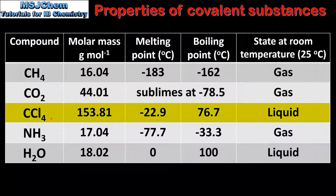If we look at carbon tetrachloride we can see it has a higher molar mass, which results in a higher melting point and boiling point. A higher molar mass results in stronger London dispersion forces between its molecules. Therefore it's a liquid at room temperature.